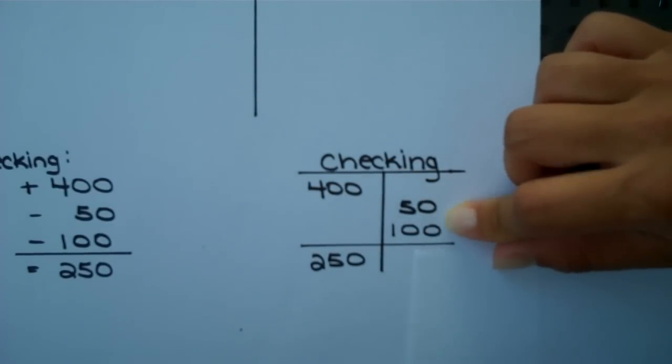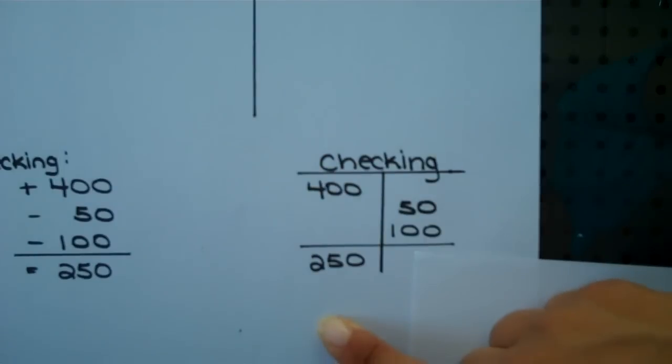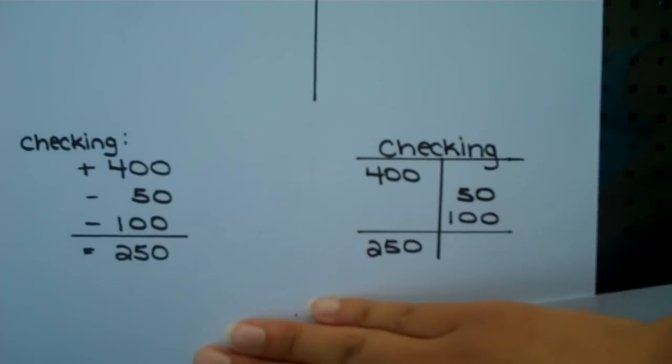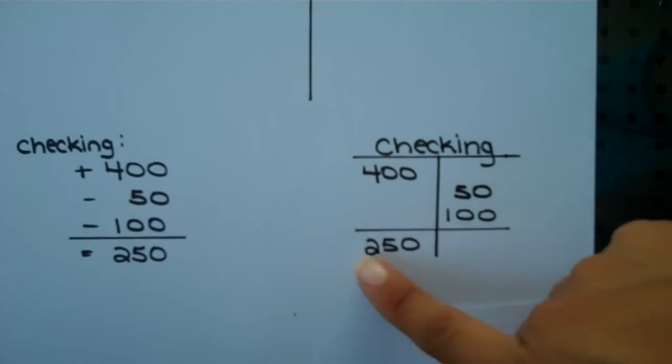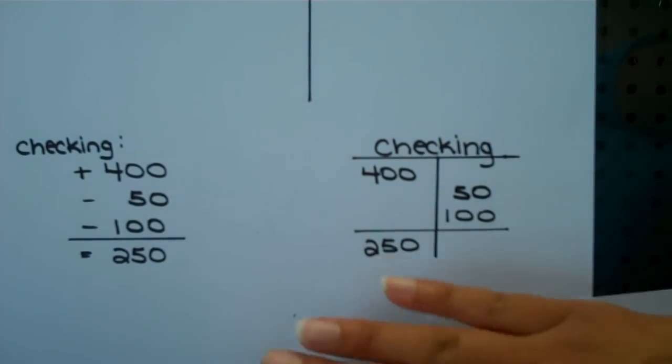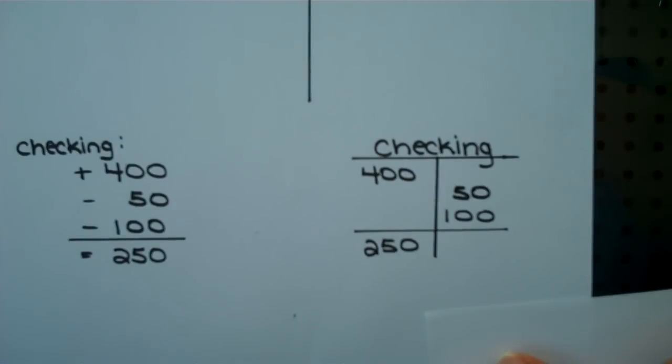You would list all deductions from the account on the right side or the credit side and you would show the ending balance on the left side because it happens to be greater. So you can see in both examples, you're left with the exact same answer. It's just a different way to present this information.